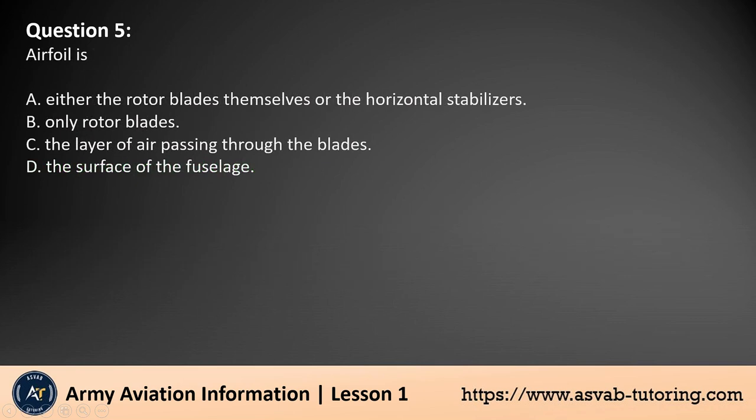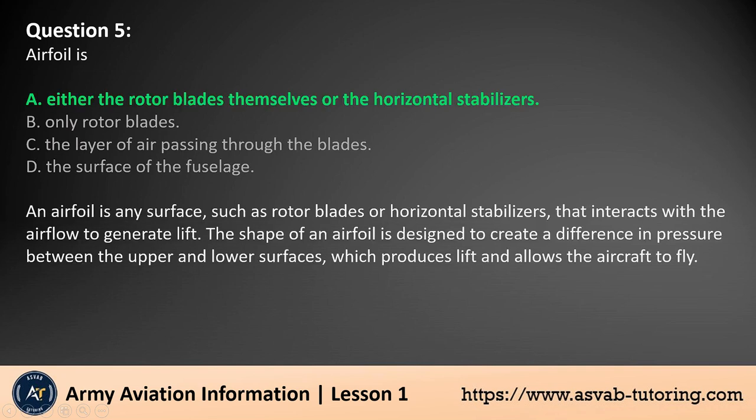Question 5. Airfoil is. A. Either the rotor blades themselves or the horizontal stabilizers. B. Only rotor blades. C. The layer of air passing through the blades. D. The surface of the fuselage. The answer is A.